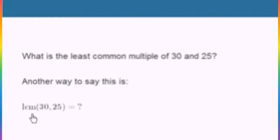We need to figure out the least common multiple of 30 and 25. I'm going to do this using the prime factorization method, which I just like more.